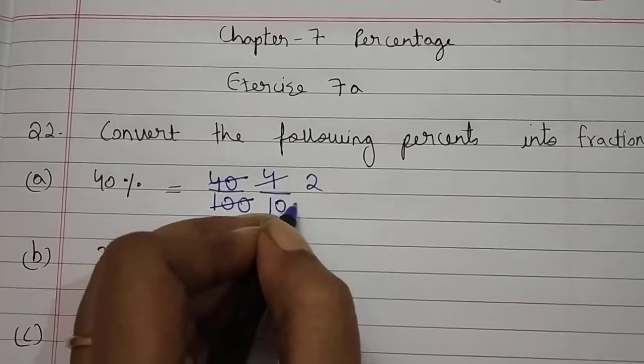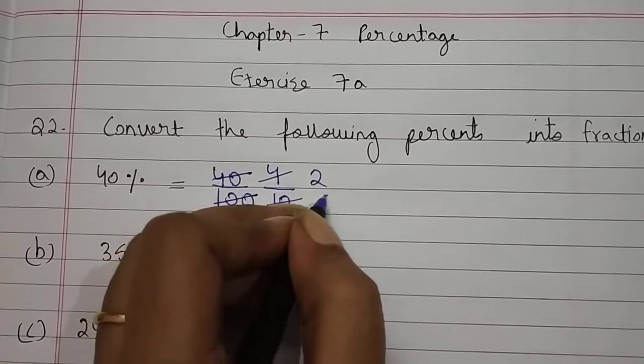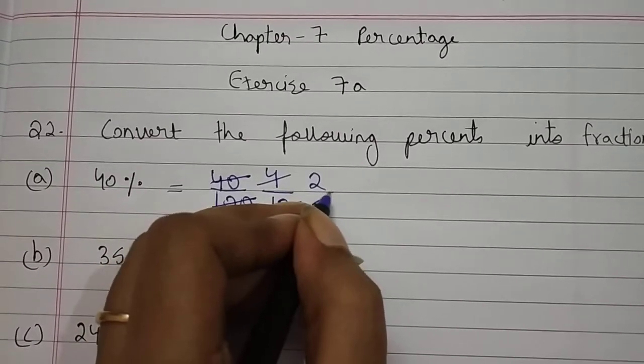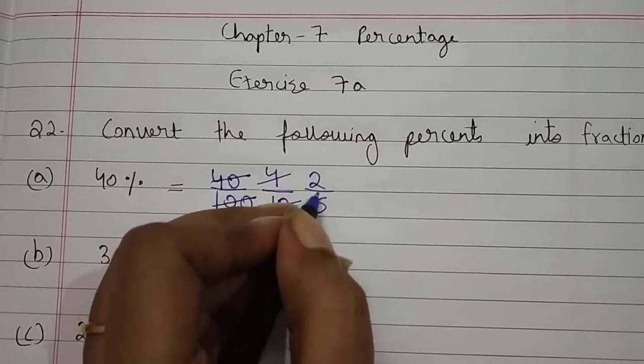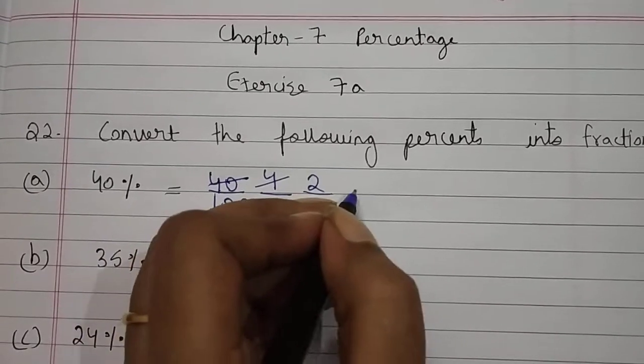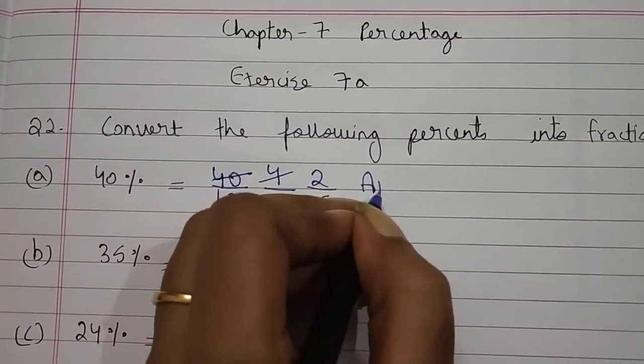2, 2 जा 4. 2, 5 जा 10. Students, 2 upon 5 — this is your answer.